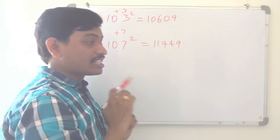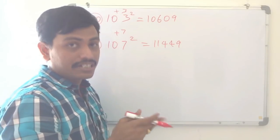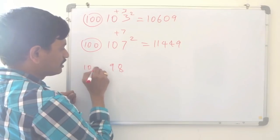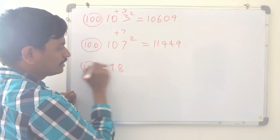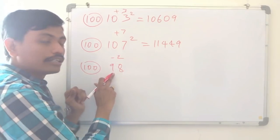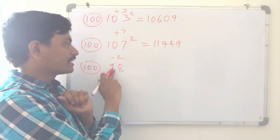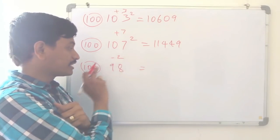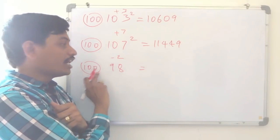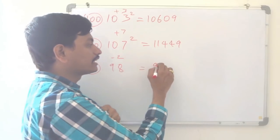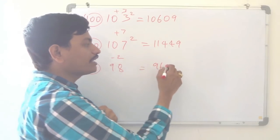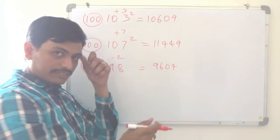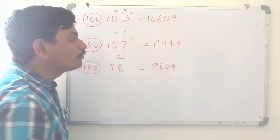Now I will take a number between 90 to 100. I will take 98, which is nearer to 100. 98 is how much lesser than 100? Minus 2. Always subtract or add to the number itself when nearer to 100. So 98 minus 2 is 96. And 2 squared is 4; we write 04 since we need 2 digits. So 98 squared is 9604.